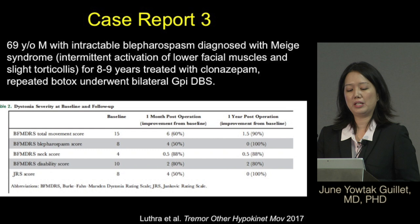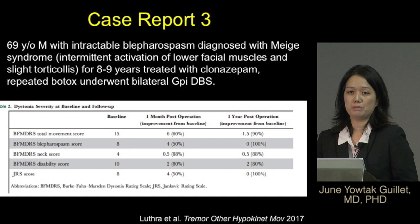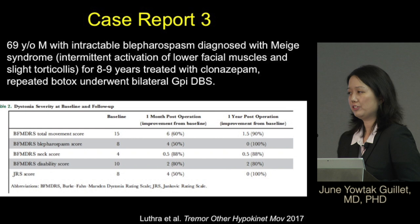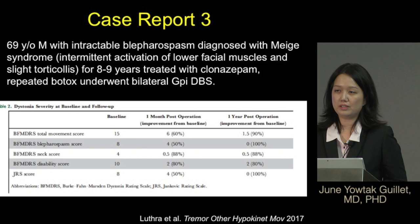The third case was a patient initially diagnosed with blepharospasm who later developed additional symptoms and was diagnosed with Meige syndrome. He had previously been treated with Botox and clonazepam before undergoing DBS. One year after surgery, he had very good outcomes with almost complete resolution of blepharospasm.